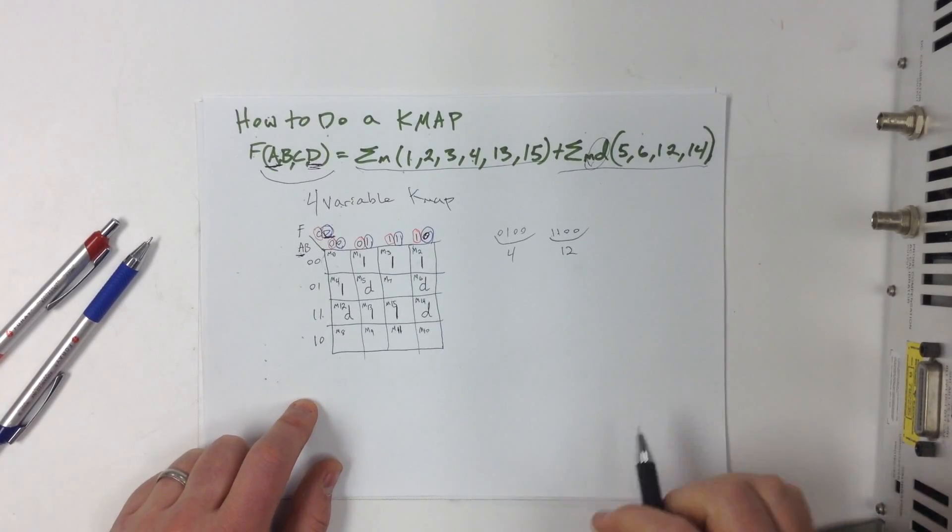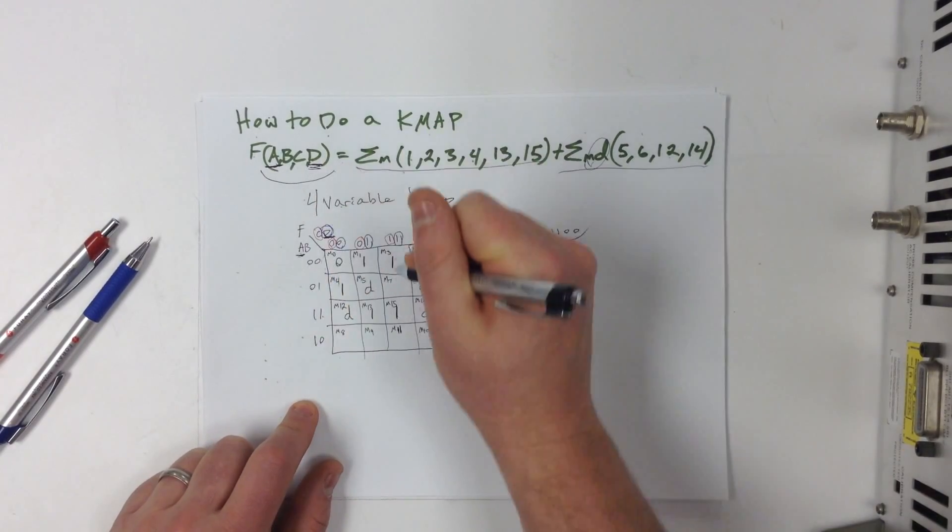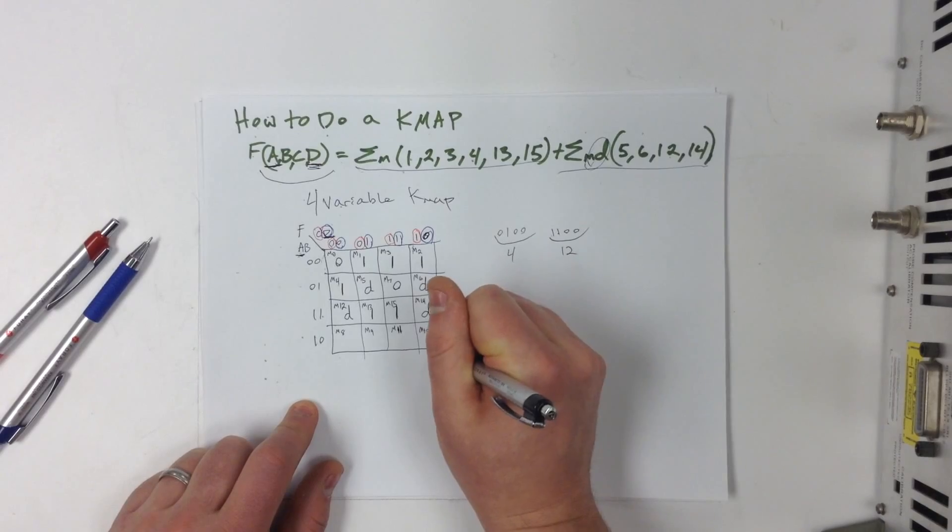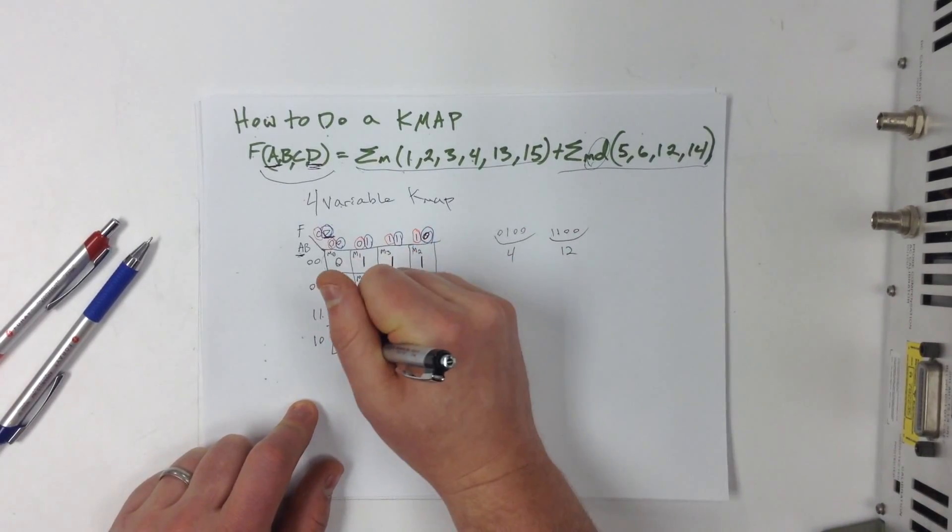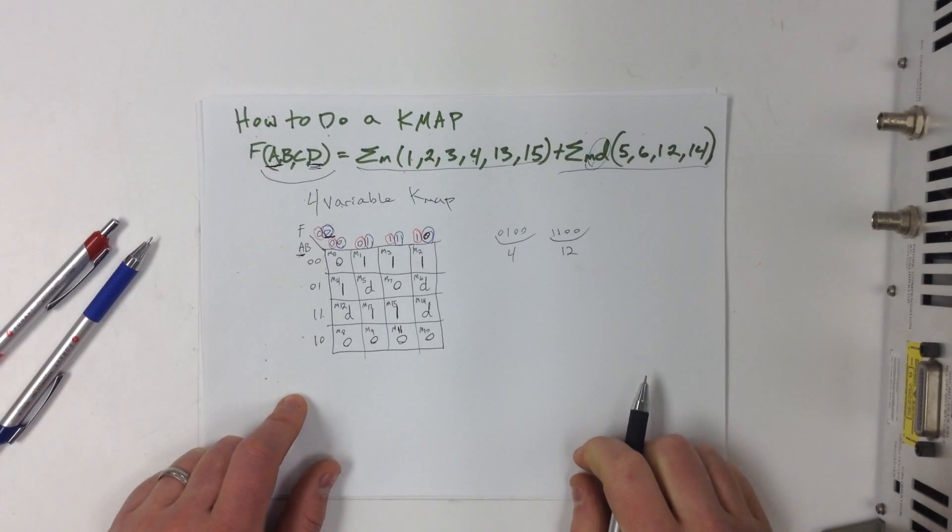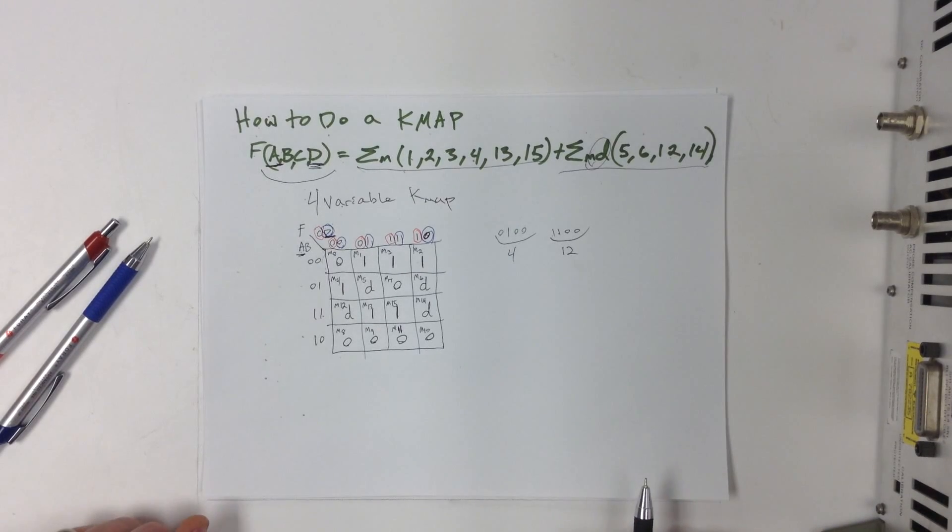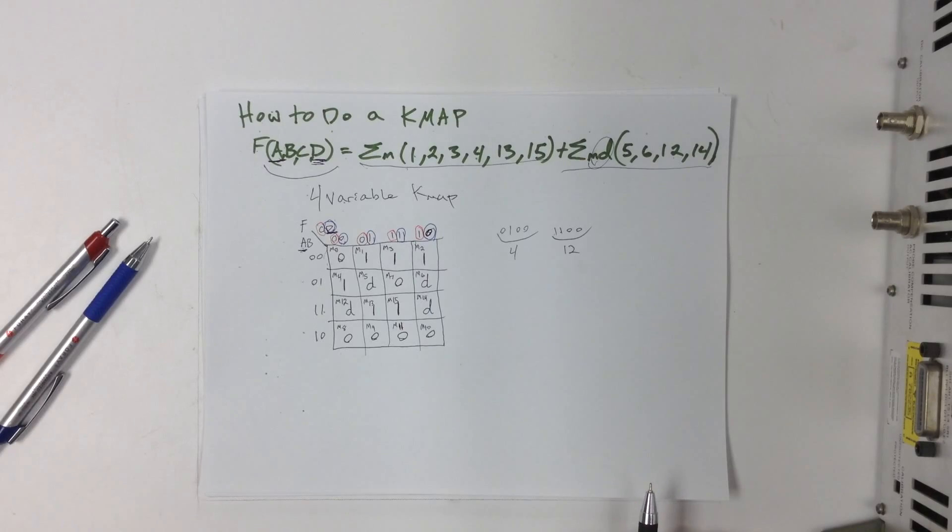Then, well, the only choice for the rest of them, right, is 0's. So we'll go ahead and fill all the rest of the bits in with 0. So now we have a full K-map. Now it's time to group.